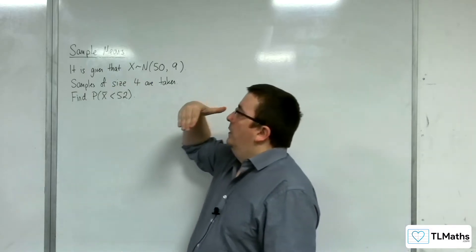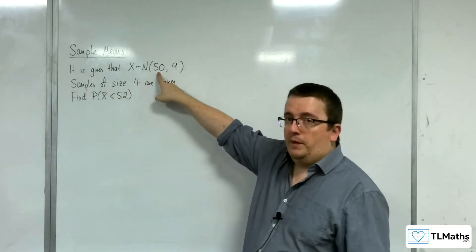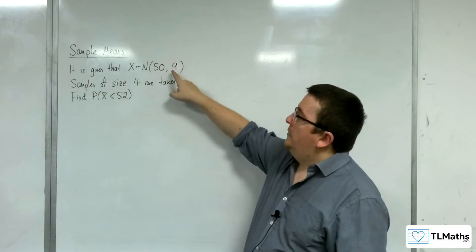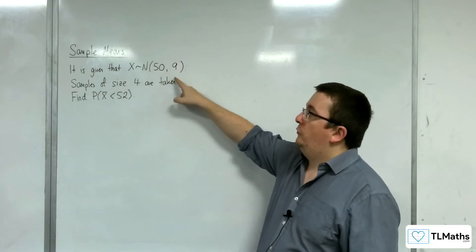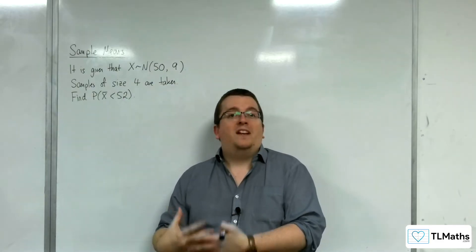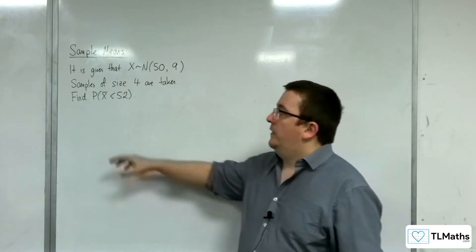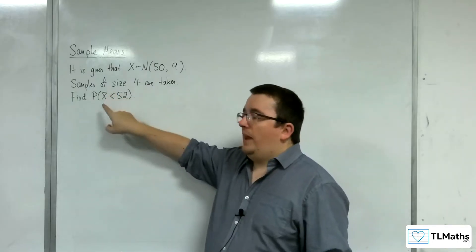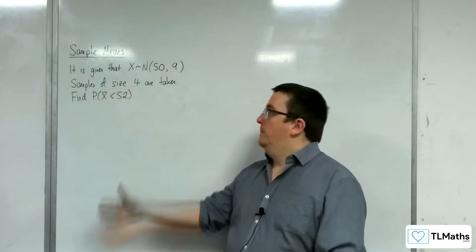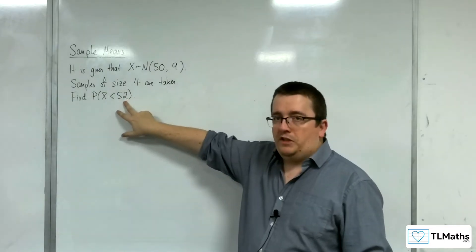With a mean that's going to be the same as the 50 from the population, and a variance that is going to be smaller because of taking samples of size 4, they're going to be more consistent. Find the probability that I take a sample of size 4, that the mean of that sample is less than 52.